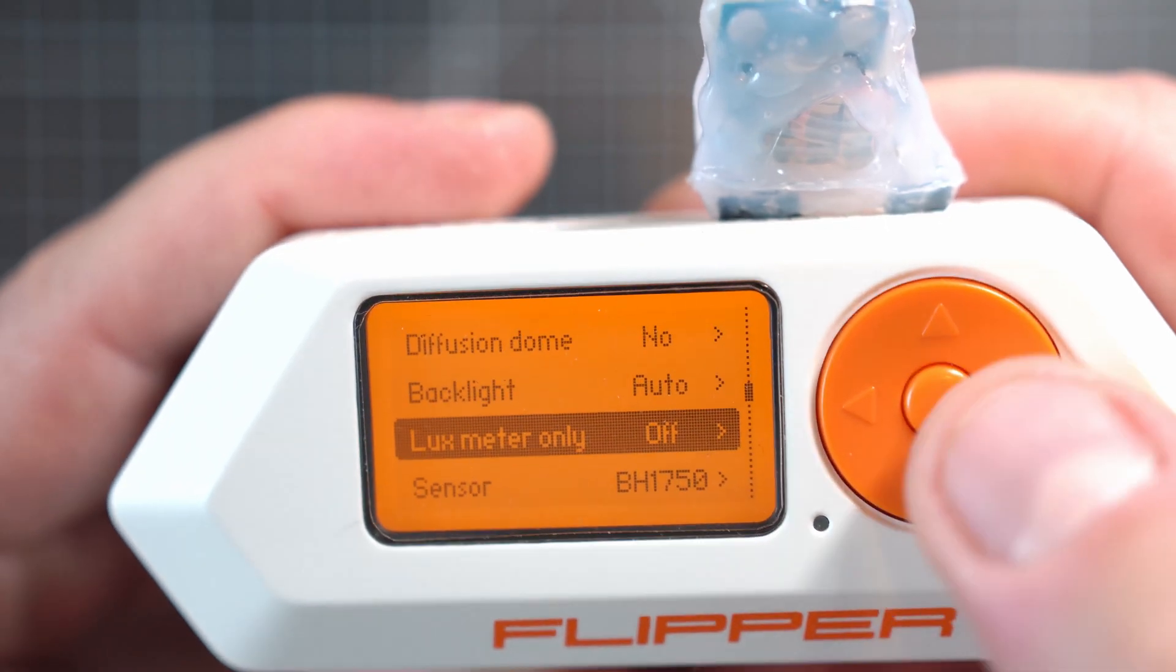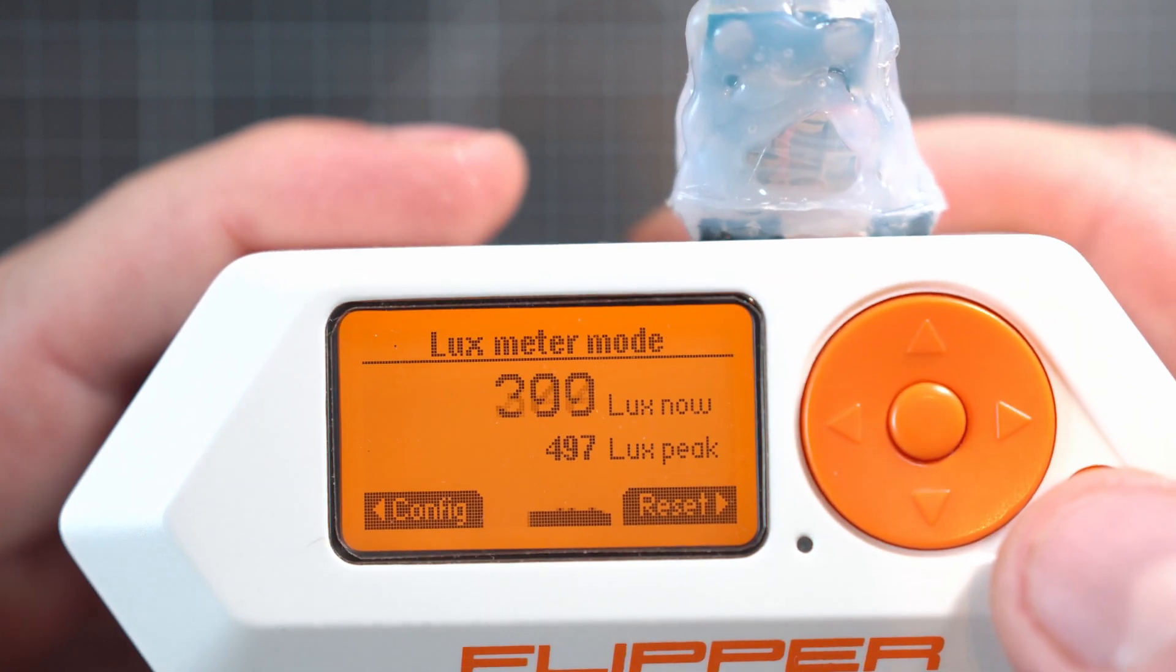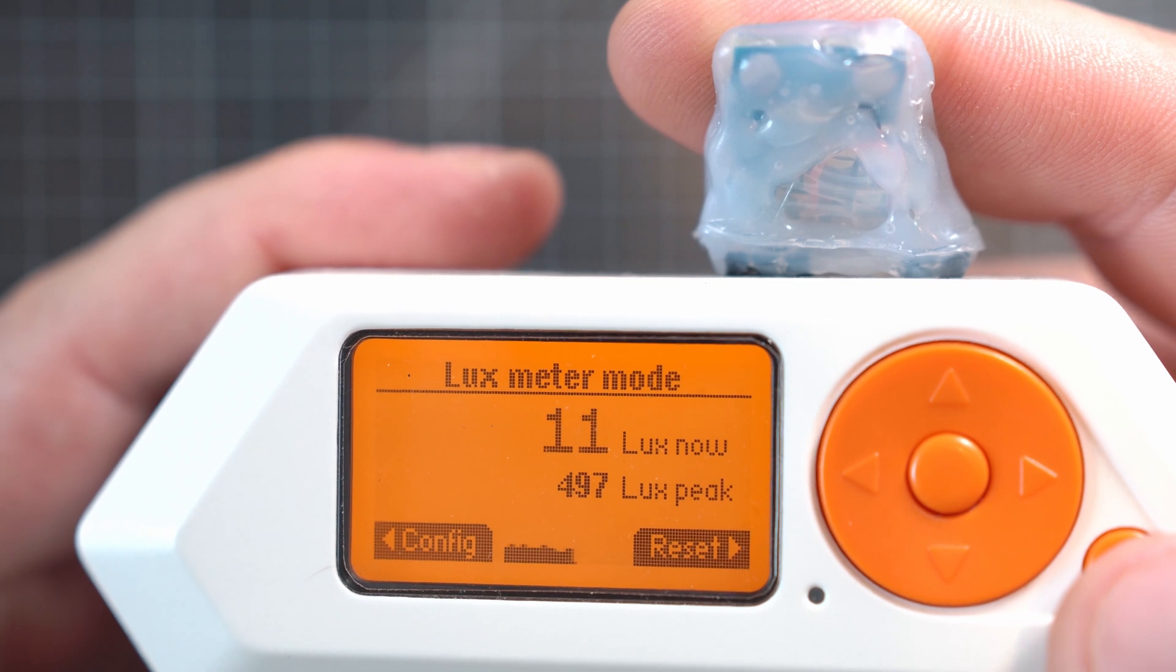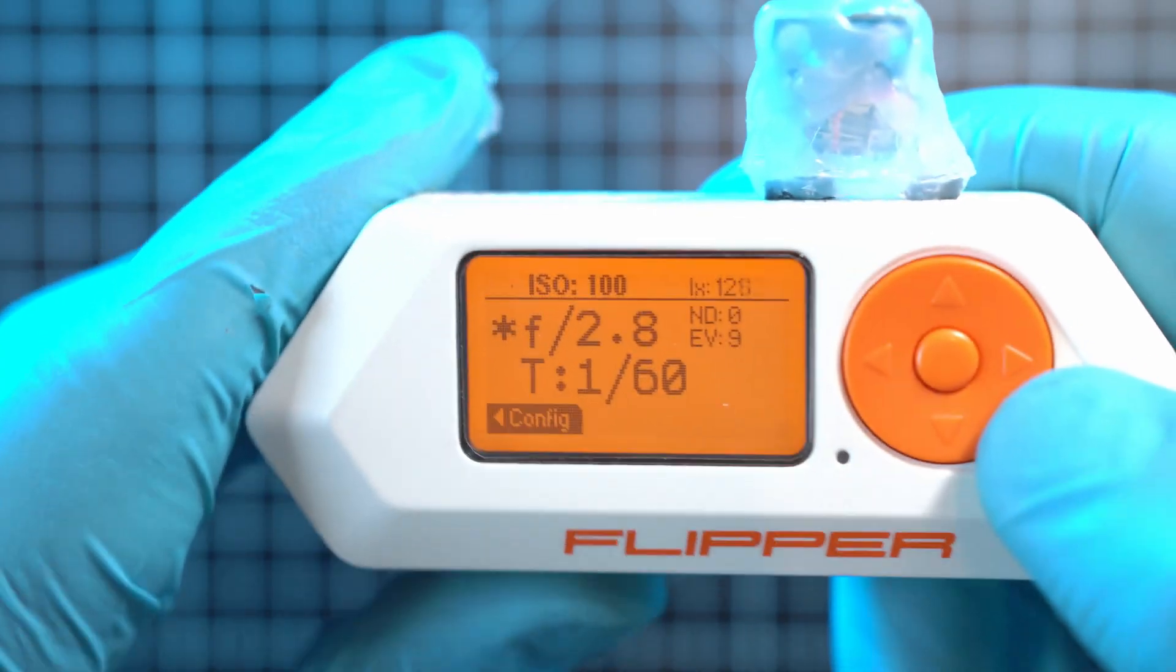In Lux meter only mode, chose history chart, and it remembers peak lux value too. You can also reset this value. Pretty cool. That's all from me.